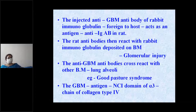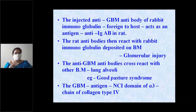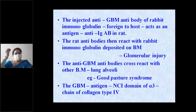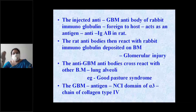The anti-glomerular basement membrane antibody from the rabbit, when injected into the rat, acted as foreign — as an antigen — to the host rat. The rat developed antibodies against this immunoglobulin. The rabbit immunoglobulin, which was the anti-GBM antibody, acted as an antigen to the second rat.